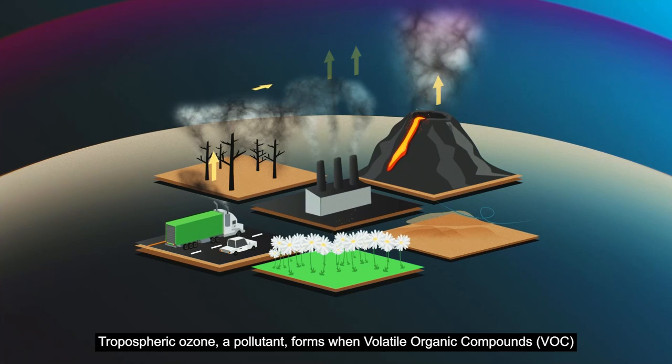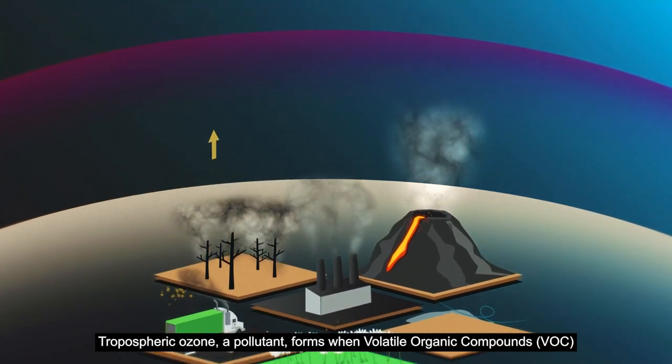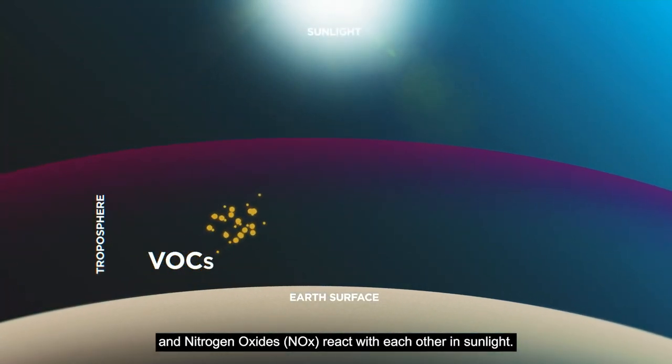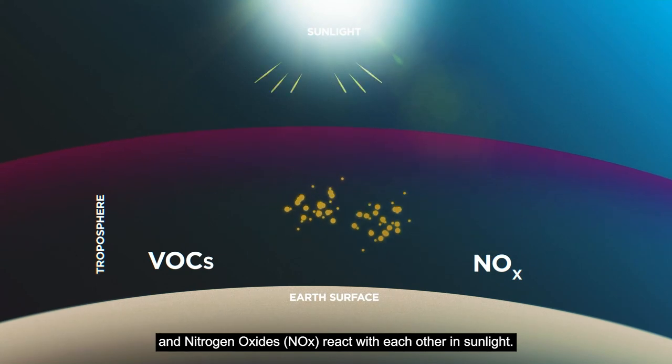Tropospheric ozone, a pollutant, forms when volatile organic compounds and nitrogen oxides react with each other in sunlight.